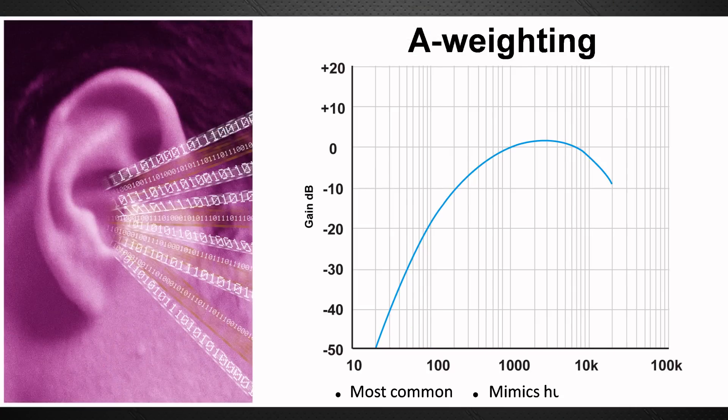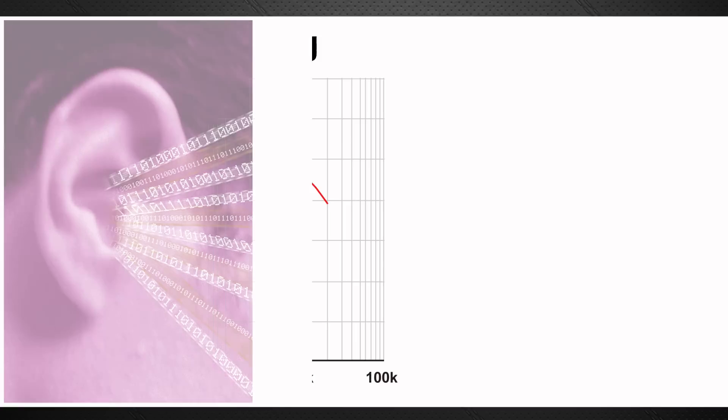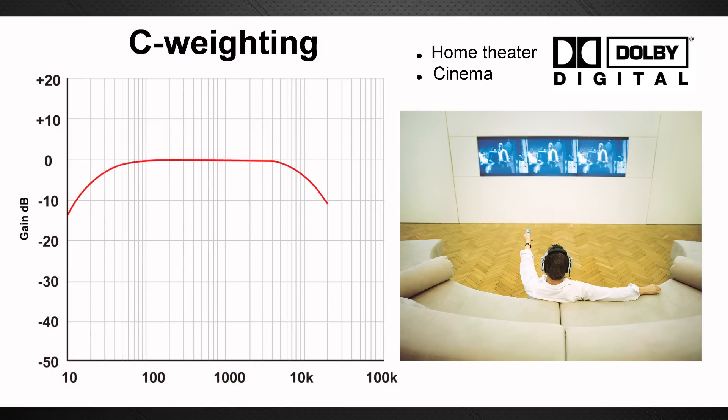A weighting is perhaps the most commonly used as it most closely mimics human hearing. However, when you go outdoors it becomes less accurate and C weighting may be applied. C weighting is also most commonly used with Dolby systems. If we play pink noise through a Dolby system, when we get to about 83 decibels we can take this as the base level, as this is the standard that Dolby uses, as do a lot of manufacturers of professional cinema systems.